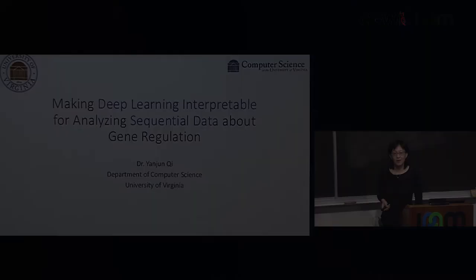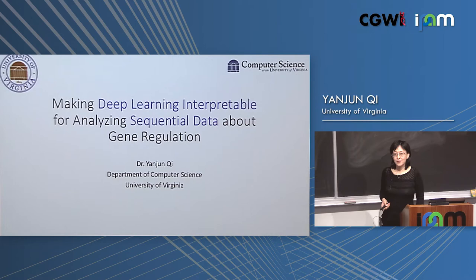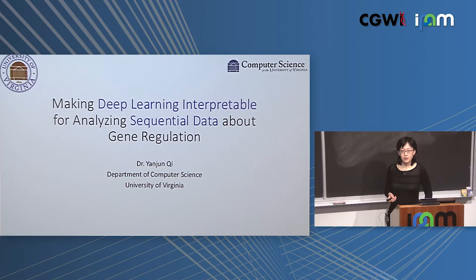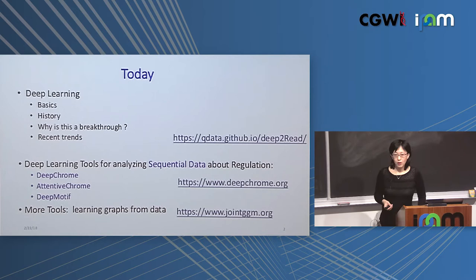My name is Yanjun Qi, from the University of Virginia Department of Computer Science. Today I'm going to talk about making deep learning interpretable for analyzing sequential data about gene regulation. I'm going to make the talk half tutorial, half about my work.